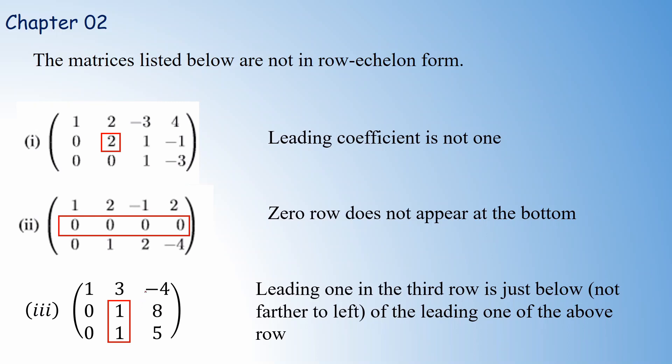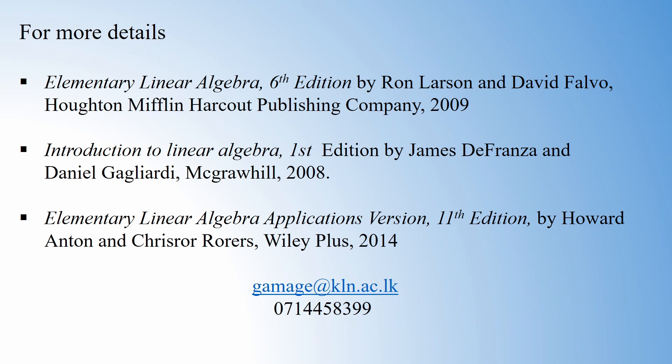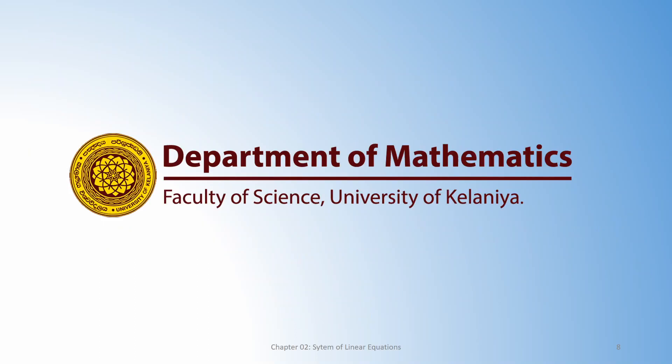When looking at a given matrix, you should be able to identify whether it is in row echelon form or not. Usually, when solving a linear system, we convert the augmented matrix into row echelon form using elementary row operations, and then by considering the equivalent system, we can easily solve the linear system. We will discuss how to do that in the next few video lessons. Thank you so much for joining us.